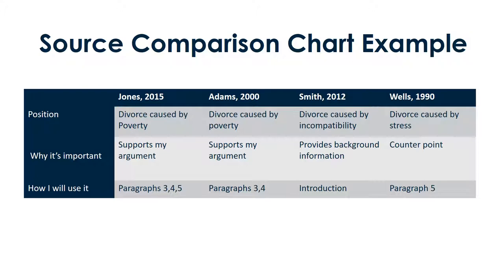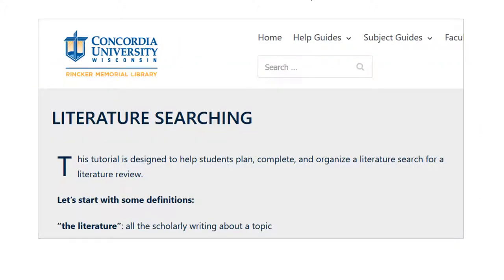Here's an example of a source comparison chart. Each column represents a different source, and each row details an important aspect of each resource, such as the author's position on the topic or why the source is important. Our Literature Searching Help Guide has more information on this.